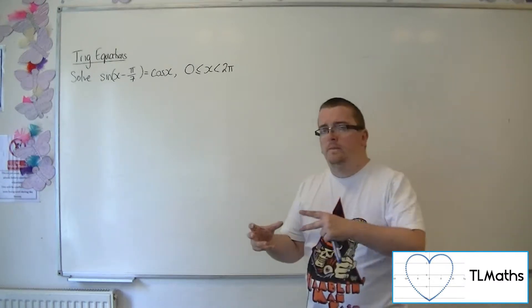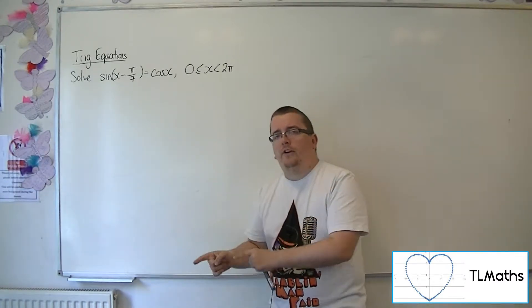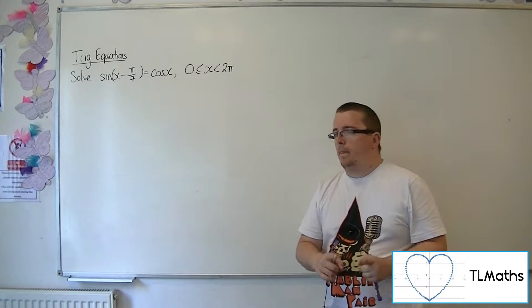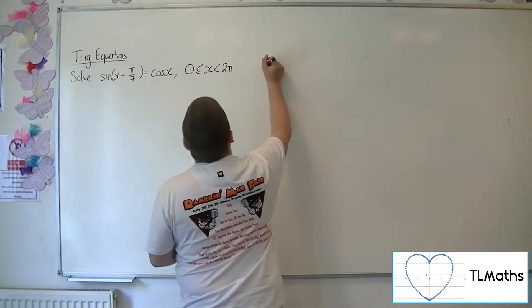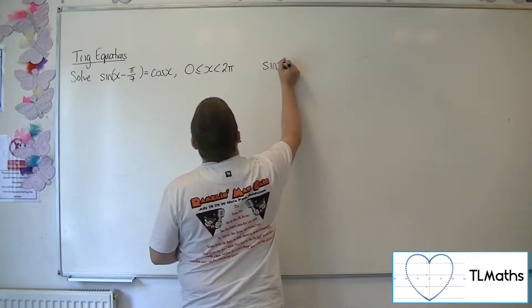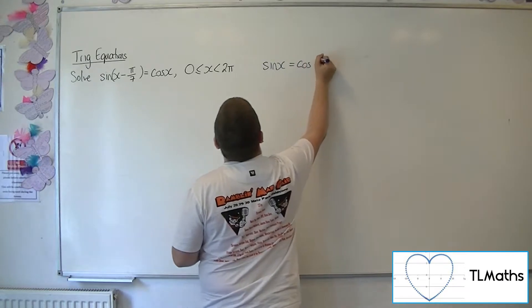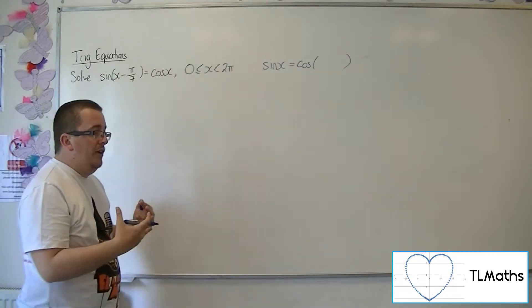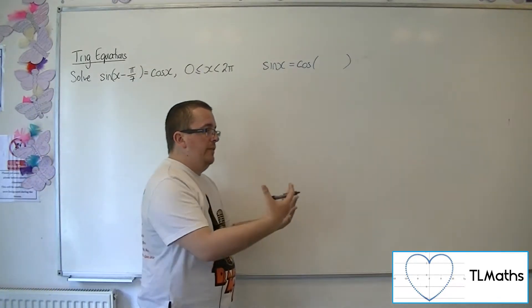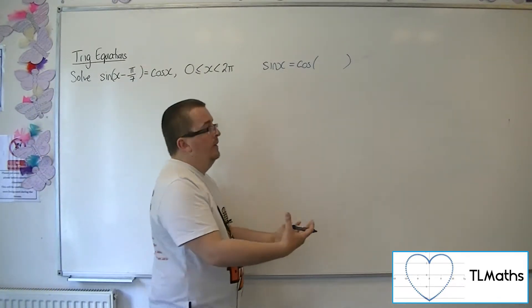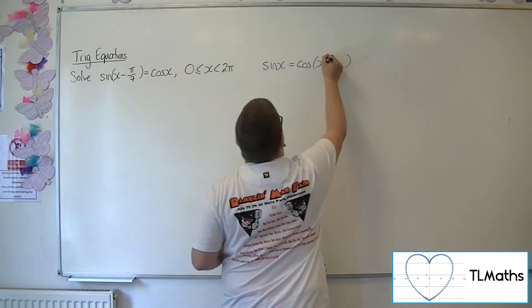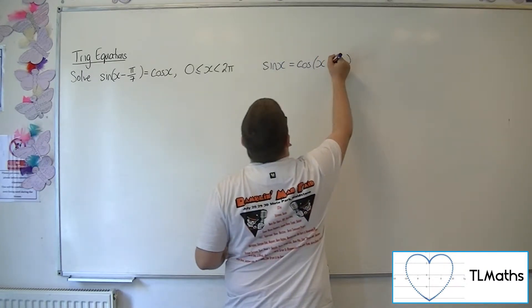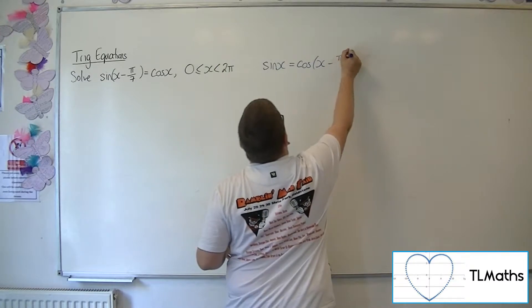So what we want to do is we actually want to write sine in terms of cosine. Sine of x is equal to cosine of... now thinking about cosine, how do I get to sine? I need to translate pi over 2 to the right. So that would be x minus pi over 2.